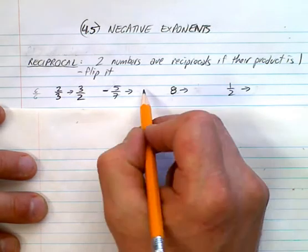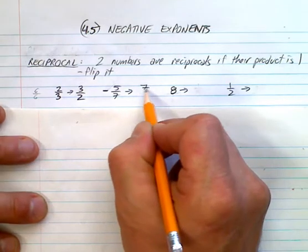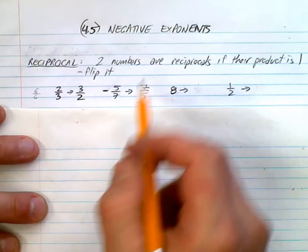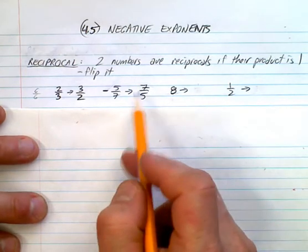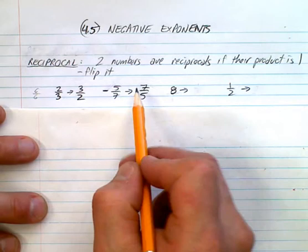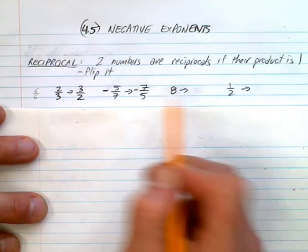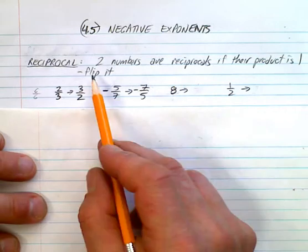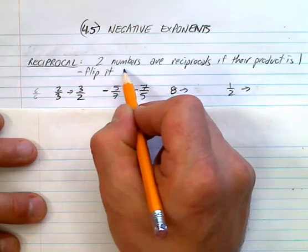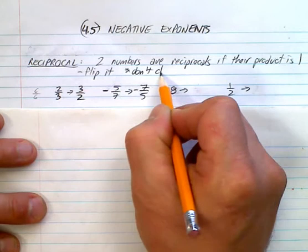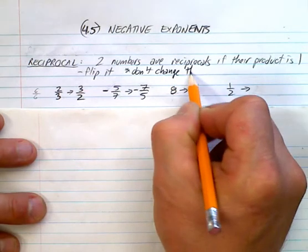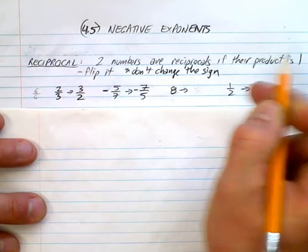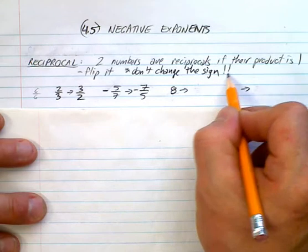Now if I multiply these together, I get negative 1. Wait a sec. Oh, look, I have to keep the negative. So one thing that you have to understand is that when you find the reciprocal, you just flip it. You don't change the sign. Don't change the sign. If it's negative, it stays negative. If it's positive, it stays positive.